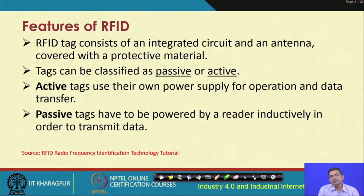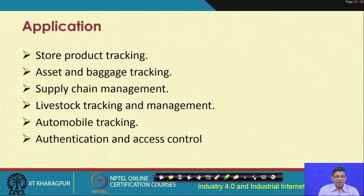An RFID tag consists of an integrated circuit and an antenna covered with a protective material. Tags can be classified as passive or active. Active tags have their own power supply for operation and data transfer. Passive tags do not have their own power supply and must be powered inductively in order to transmit data. Applications include store product tracking, asset and baggage tracking, supply chain management, livestock tracking, automobile tracking, authentication, and access control.